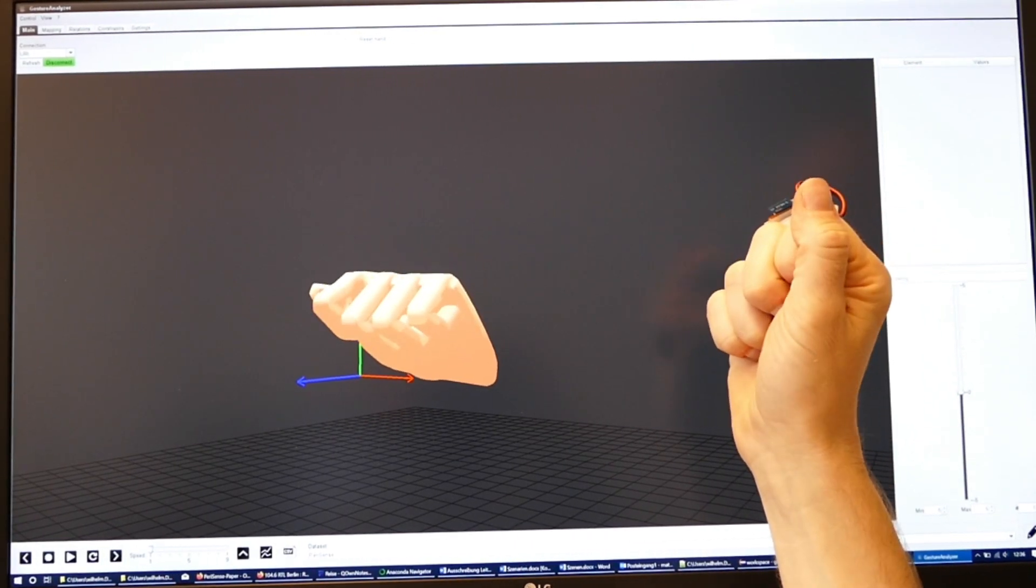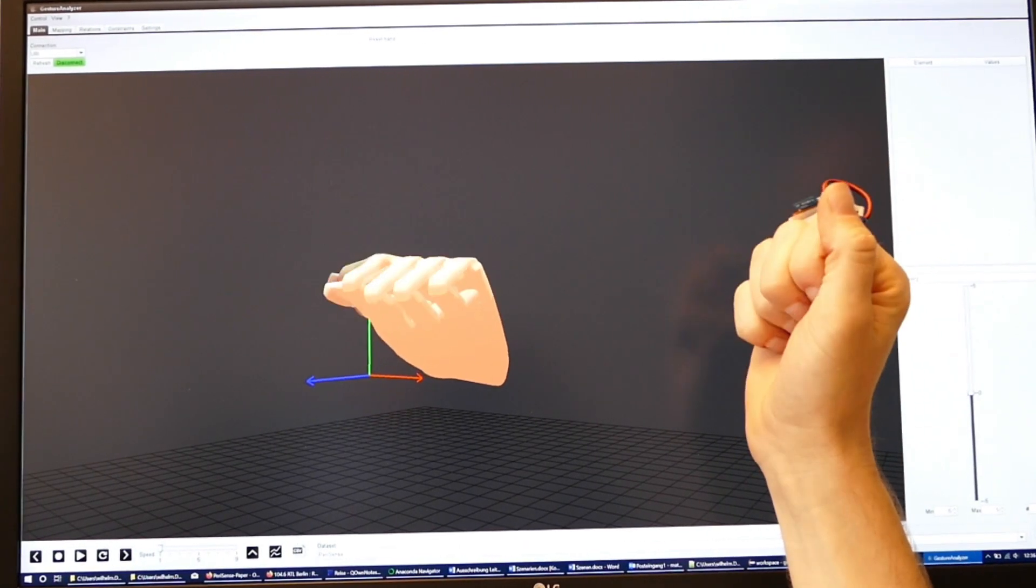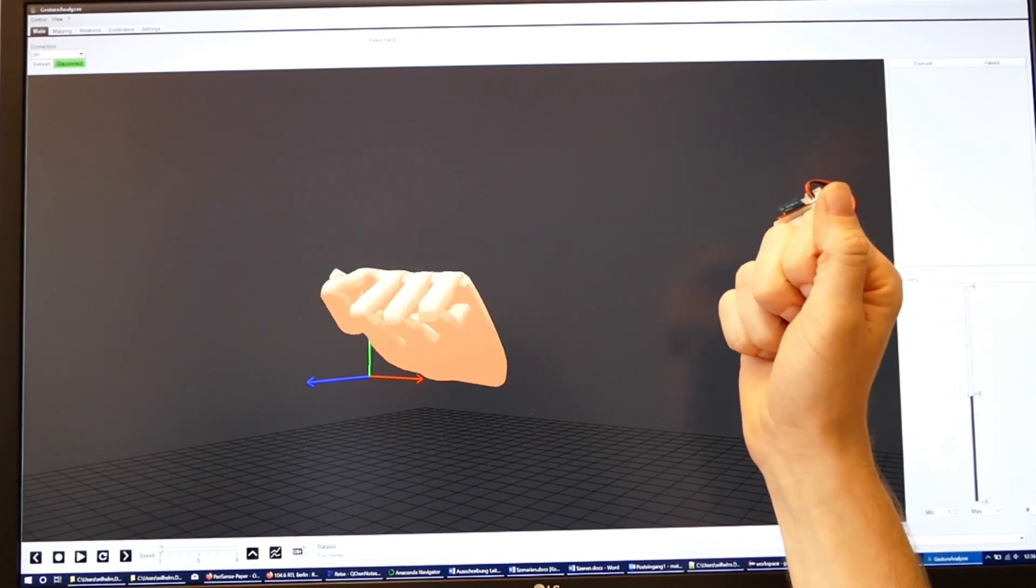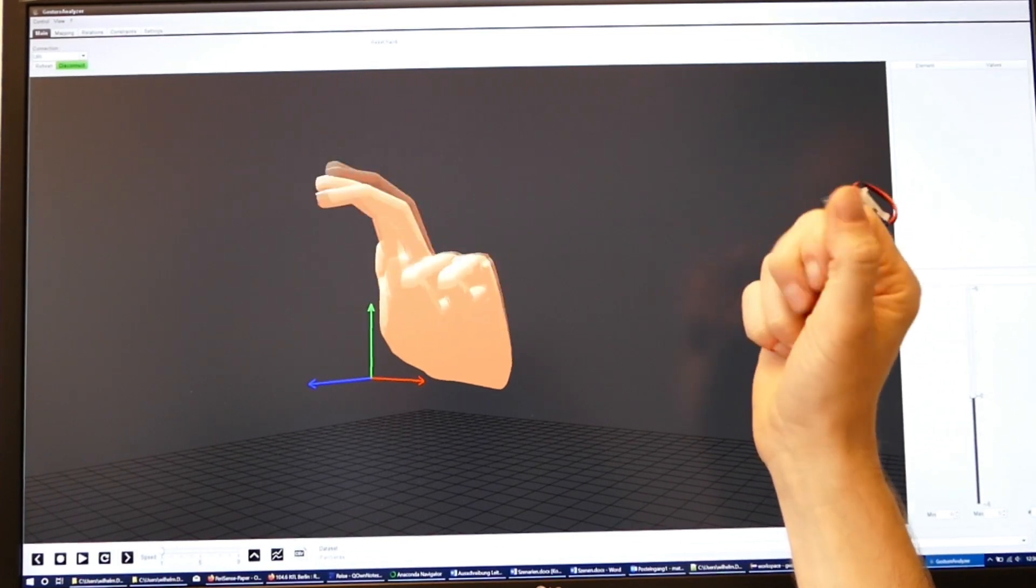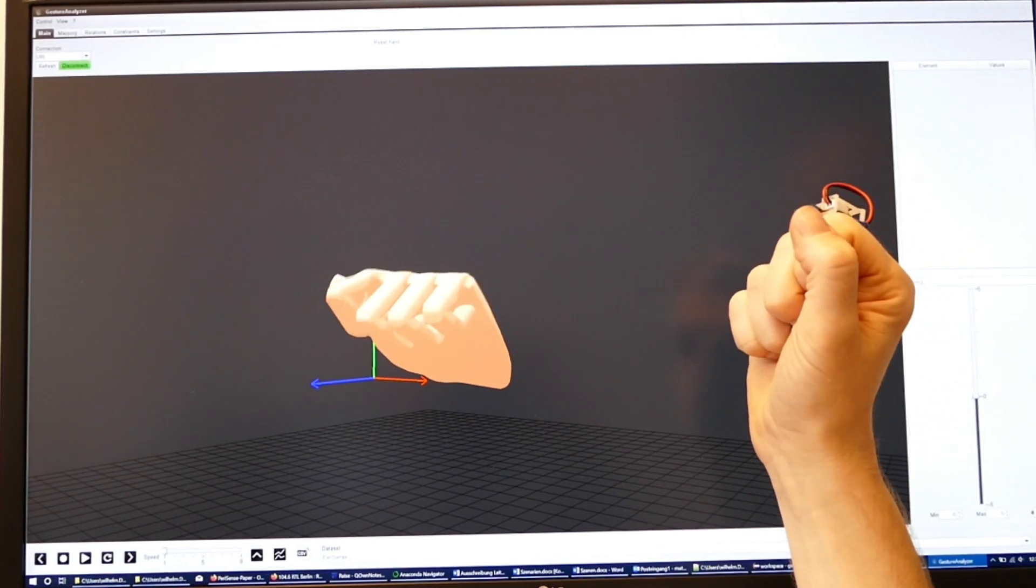First evaluation results reveal the promising potential of capacitive proximity sensing. PariSense is an enabling technology for diverse and versatile multi-finger interactions with the single ring.